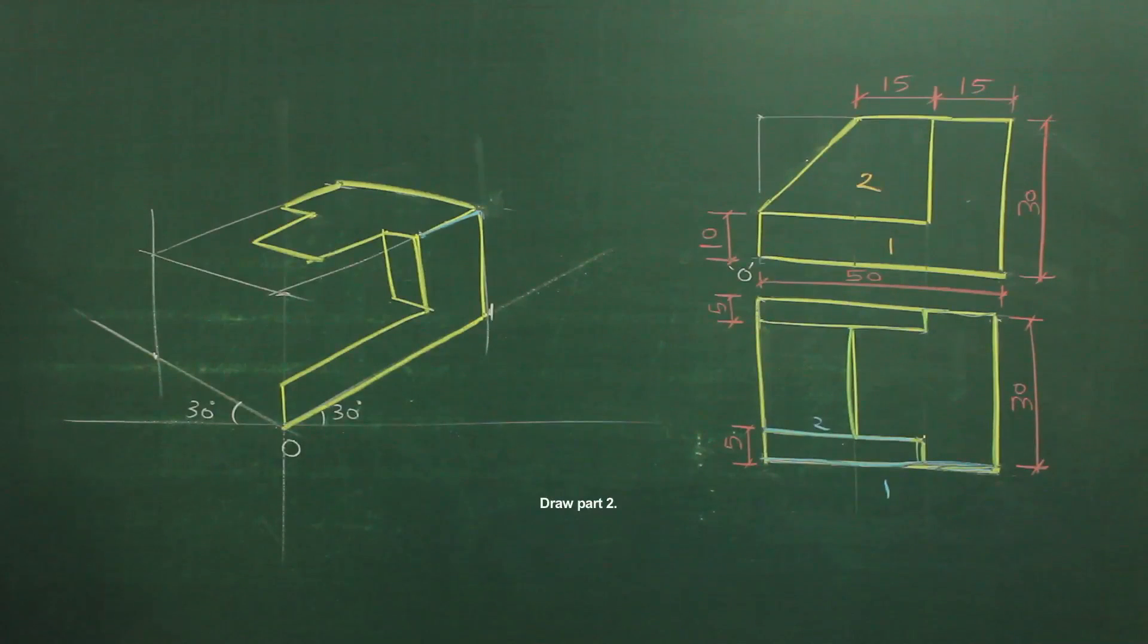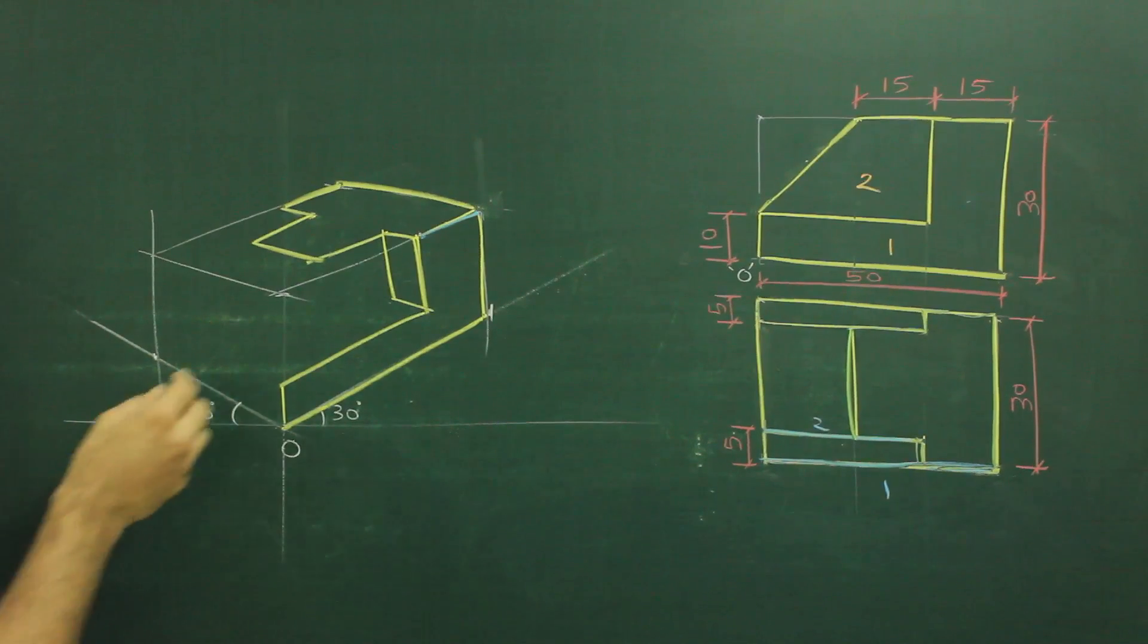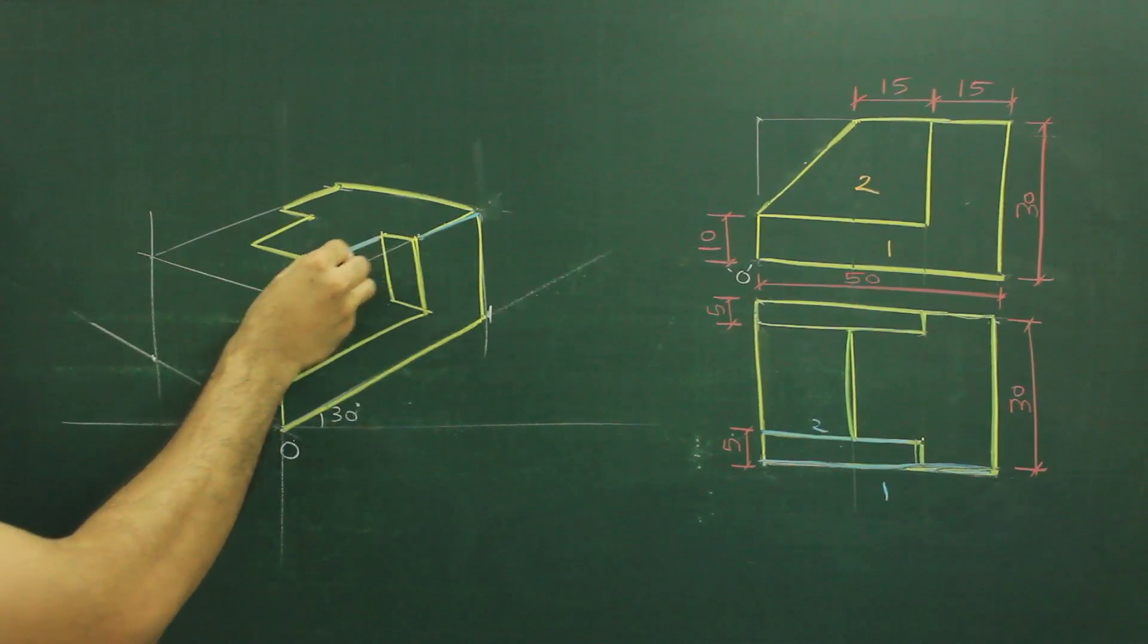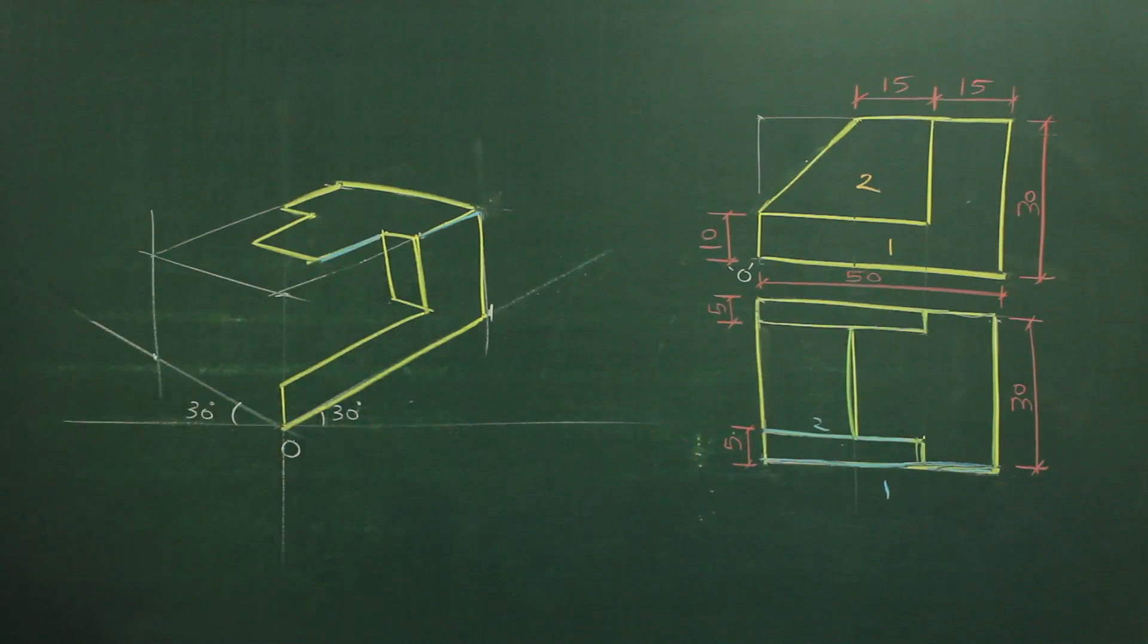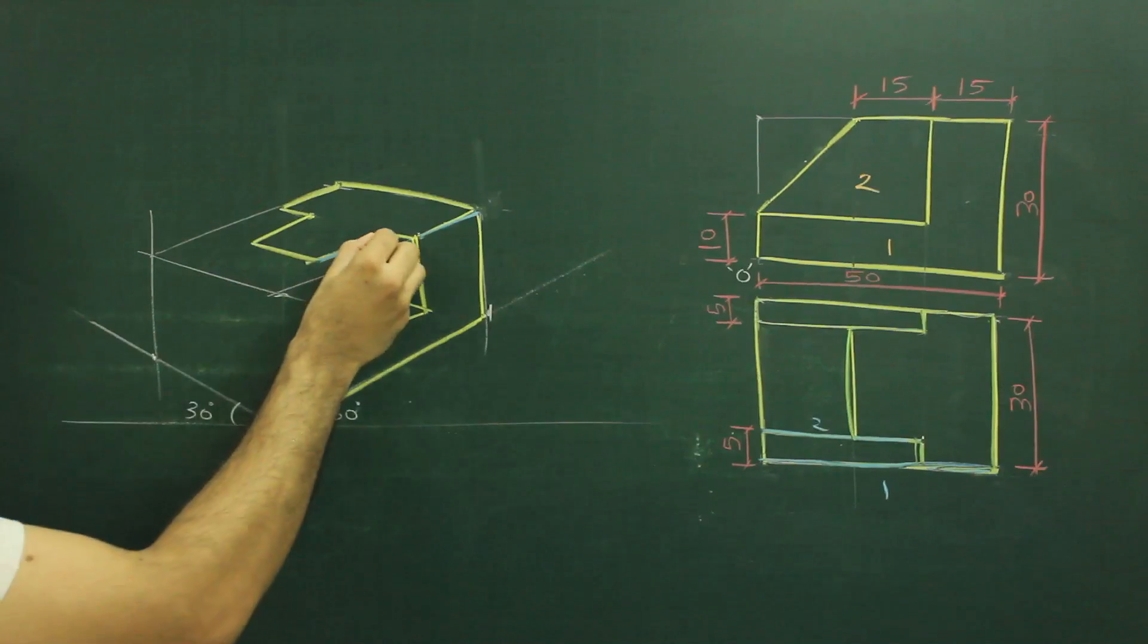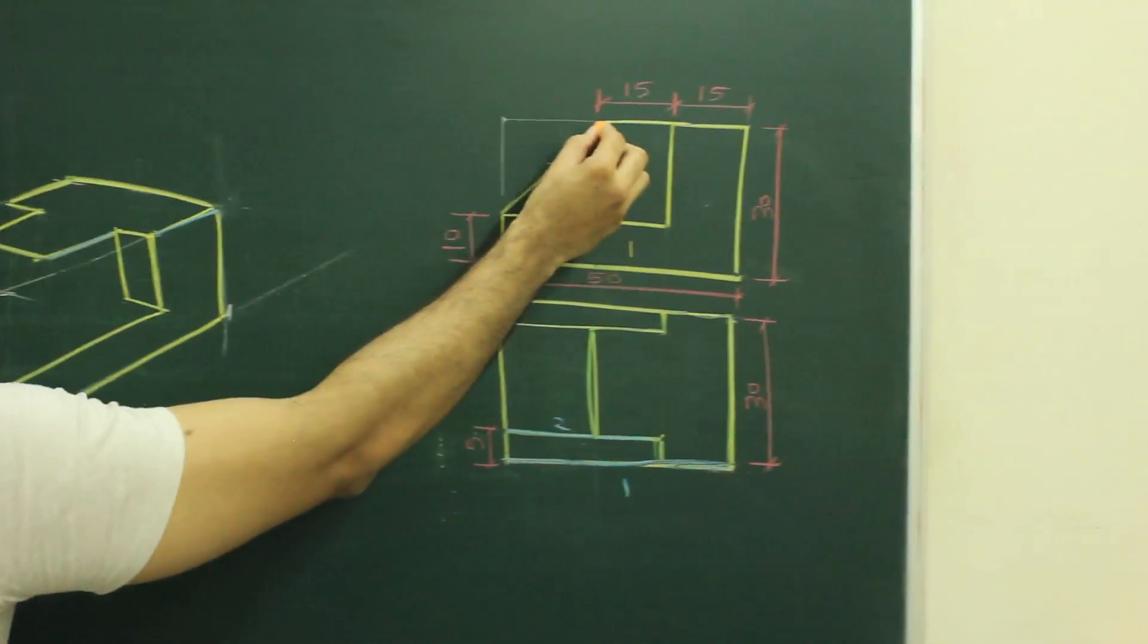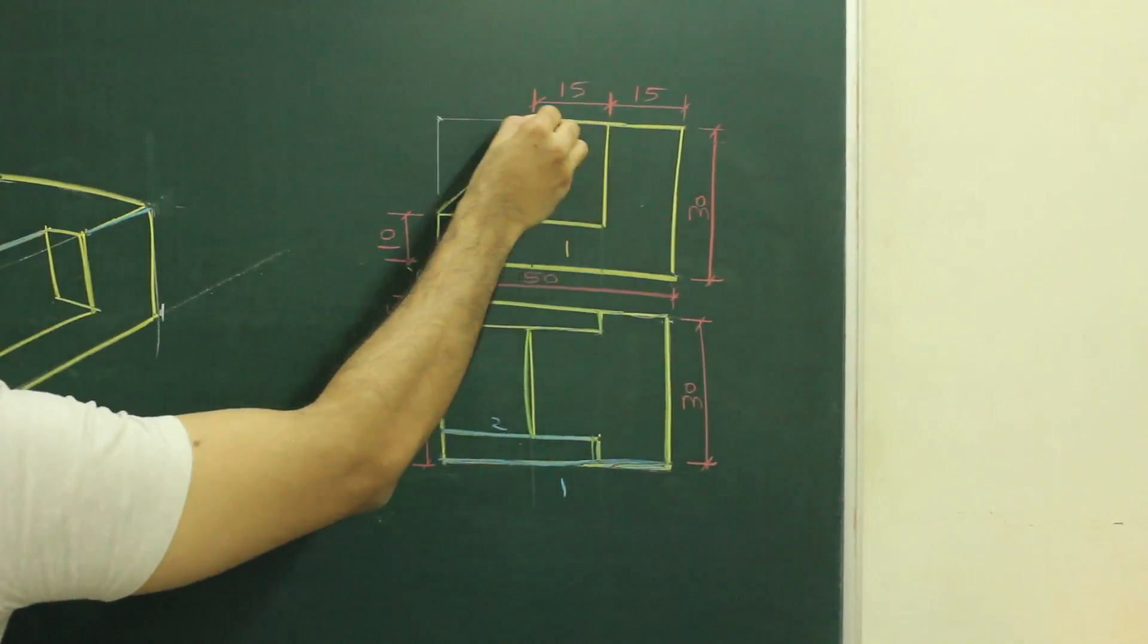Now we need to draw part 2. So if you see in part 2, I have already drawn this part, which is there in front view as well as in top view. In front view, this part is here. See, this part is here.